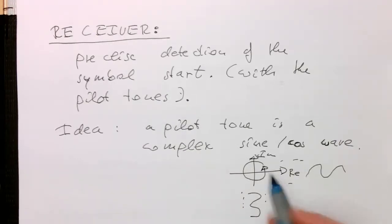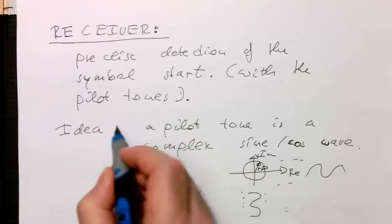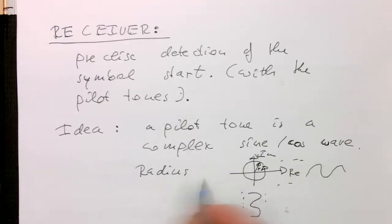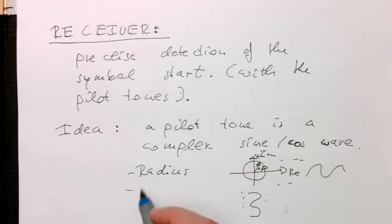And so, this has obviously an amplitude. We've got the R and also the angle here, which is rotating. And so, there's a radius and we've got a phase.